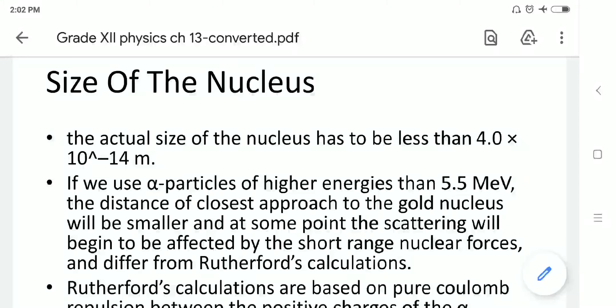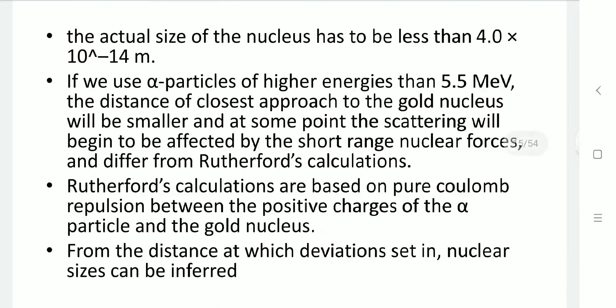The size of the nucleus has to be less than 4 × 10⁻¹⁴ meter. This can be identified by alpha particle scattering. If we use alpha particles having energy higher than 5.5 megaelectrovolts, then the distance of closest approach to the gold nucleus would be smaller, and the scattering will begin to be affected by the short-range nuclear force, differing from Rutherford's calculation, which is based only on the Coulomb repulsive force between the alpha particle and gold nucleus.